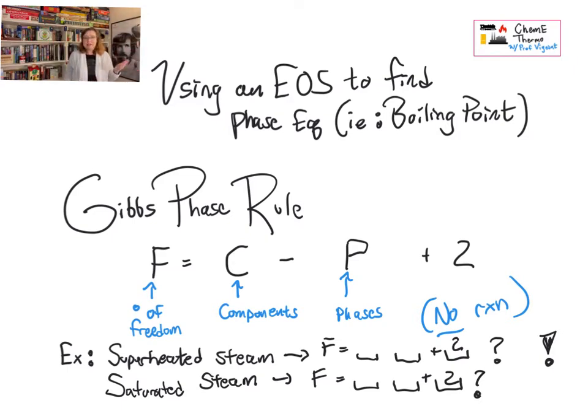All right, now let's talk about saturated. If it's saturated, we have one component. We now have two phases. Even if it's saturated water, and we say it's 100% liquid, doesn't matter. It counts as two phases because it's saturated. So that's 1 minus 2 is negative 1 plus 2 is now we're to 1. I only have one degree of freedom. And that should sound familiar because if I say to you, what is the boiling point of water at atmospheric pressure, there is only one answer. There isn't a variety of answers.